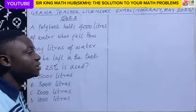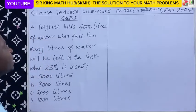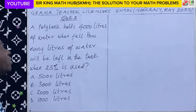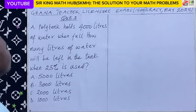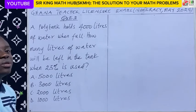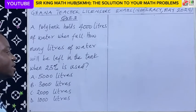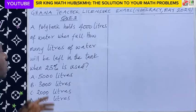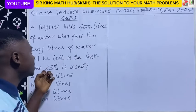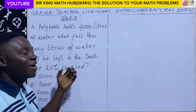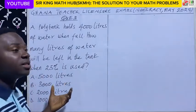Question 3. A polytank holds 4,000 litres of water when full. How many litres of water will be left in the tank when 25% is used? In this question, we have to apply percentages.